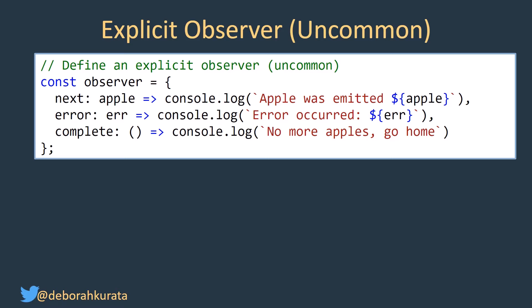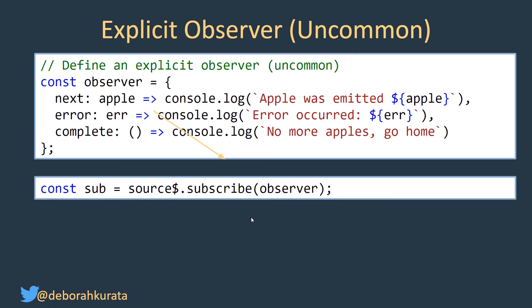Now you can define an explicit observer, though this is uncommon. I just like to show this because it makes it more clear what an observer is, though we don't normally write code like this. An observer is an object with three methods: a next method defined with an arrow function that receives that emission — in this case an apple — and performs an operation, which is logging. The error receives the actual error, and the action is logging. The complete doesn't give you any payload, but it does allow for an action. You need to then pass that observer in to the subscribe in order for it to actually react to those.